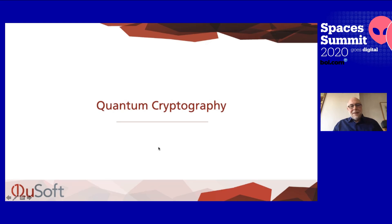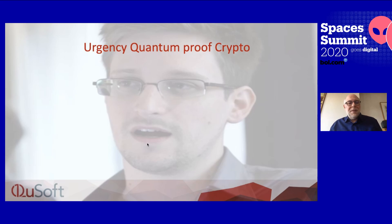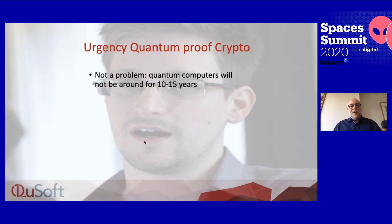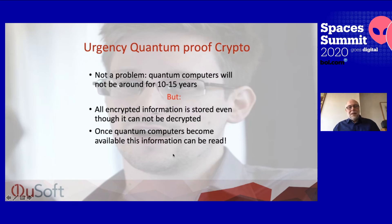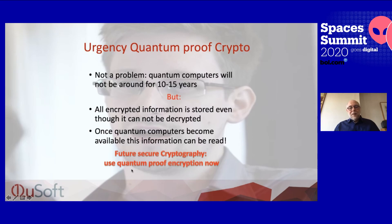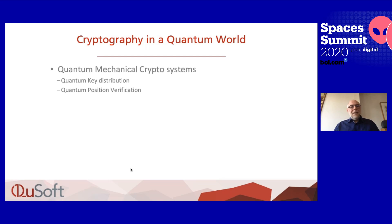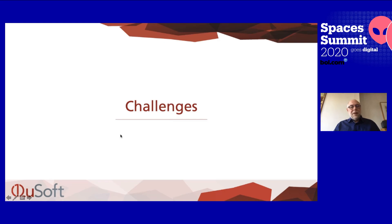Quantum cryptography is probably also very important for bol.com. You might say you're not worried because we still have to wait 10 to 15 years before we have a huge quantum computer able to factor and break codes. But you have to realize that all information stored encrypted now can and will be intercepted and stored. Once you have a quantum computer, one will be able to read it. So if you want the information you send over the Internet to be secure in the future, you already have to change your encryption now.